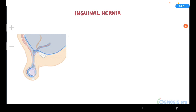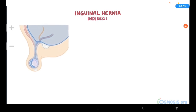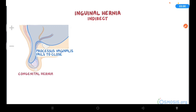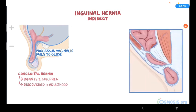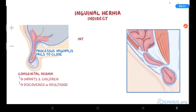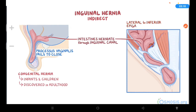Inguinal hernias can be classified as indirect or direct. Indirect inguinal hernias occur when the processus vaginalis fails to close after the testes have passed through it, so this is considered a congenital hernia. Due to the congenital aspect, indirect inguinal hernias typically occur in infants and children, but can also be discovered in adulthood. When the processus vaginalis remains open, intra-abdominal organs, like the intestines, can herniate through the inguinal canal. Specifically, the organs herniate lateral to the inferior epigastric vessels through the internal and external rings of the inguinal canal and end up in the scrotum.